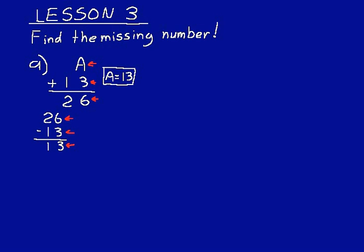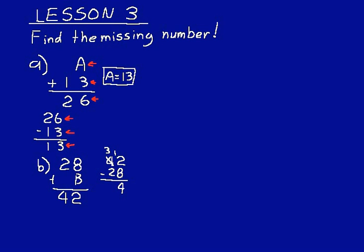Let's try another one. It's always a good idea, after we've done one practice problem, for you to pause and try the next one on your own, then fast forward to the answer to see if you got it right. 28 plus B equals 42. We have our sum, so let's subtract the other addend from that to figure out what B is. 42 minus 28: 12 minus 8 is 4, 3 minus 2 is 1, so B equals 14. And 14 plus 28 does equal 42, so that is correct.